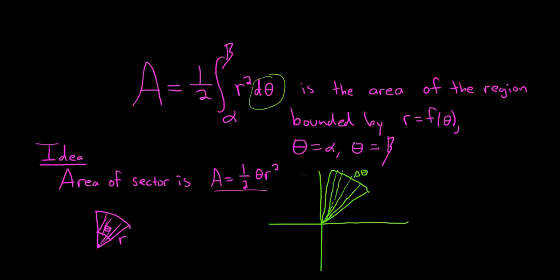Your delta theta basically turns into a d theta, loosely speaking. Your one-half gets pulled out, and your R squared remains. So it's very similar to the construction of regular integrals via rectangles, right, the area via rectangles that we do in Calculus 1, except here we're doing it via sectors. Same idea.